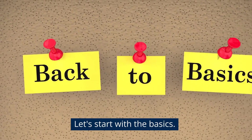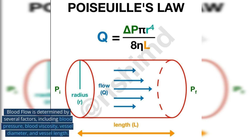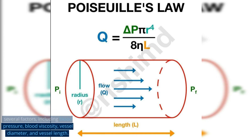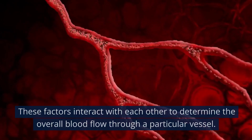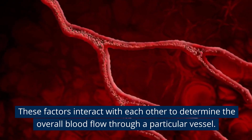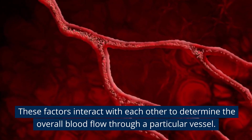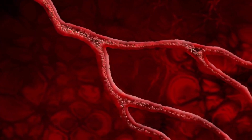Let's start with the basics. Blood flow is determined by several factors, including blood pressure, blood viscosity, vessel diameter, and vessel length. These factors interact with each other to determine the overall blood flow through a particular vessel.